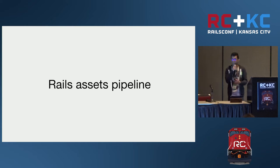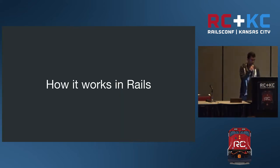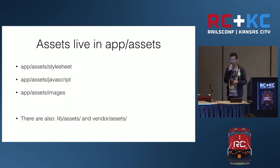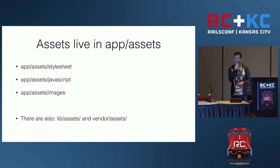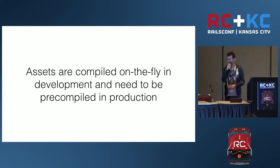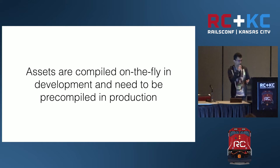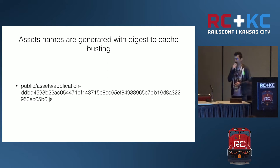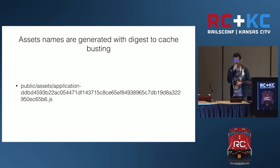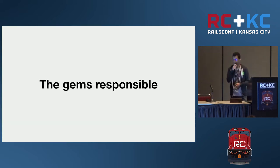How does the asset pipeline actually work in Rails right now? We have some conventions for our client-side code. Our assets live in the app/assets folder, and library assets live in the vendor/assets folder. Assets are compiled on the fly in development and need to be pre-compiled in production. We also have the full assets generated with a digest for cache busting.